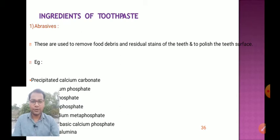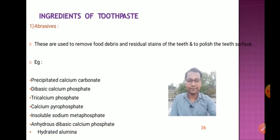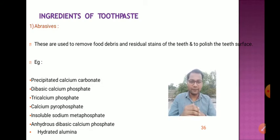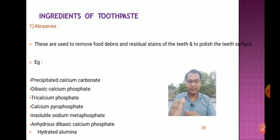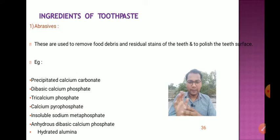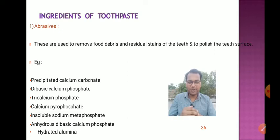The first main ingredient is abrasives. Abrasives are used to remove food debris and residual stains from the teeth and to polish the tooth surface. Examples of abrasives include precipitated calcium carbonate, dibasic calcium phosphate, tricalcium phosphate, calcium pyrophosphate, insoluble sodium metaphosphate, and hydrous dibasic calcium phosphate, and hydrated alumina.